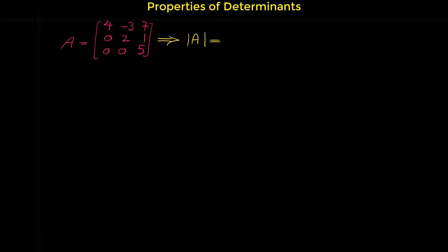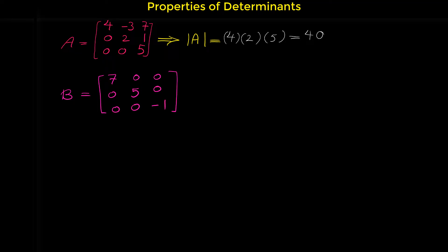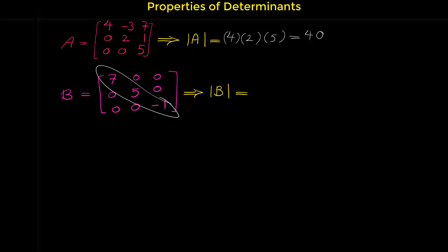So the determinant of matrix A is 4 times 2 times 5: 4 times 2 is 8, 8 times 5 is 40. Matrix B is 7, 0, 0, 0, 5, 0, 0, 0, -1. This is a diagonal matrix because only the elements of the main diagonal are non-zero. The determinant of matrix B is 7 times 5 times -1, which equals -35.